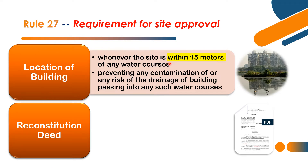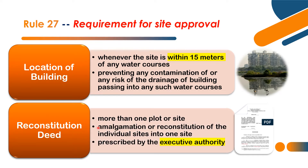The next part is the Reconstitution Deed, called Maru Sira Maipu Patthiram. This means that when our site consists of more than one plot, we make an amalgamation — a reconstitution of individual sites into one site. This is prescribed by the Executive Authority and is known as a Reconstitution Deed. For example, when two plots are combined into one site, that amalgamation is called Reconstitution. Rule 27 has two requirements: Location of Building and Reconstitution Deed.